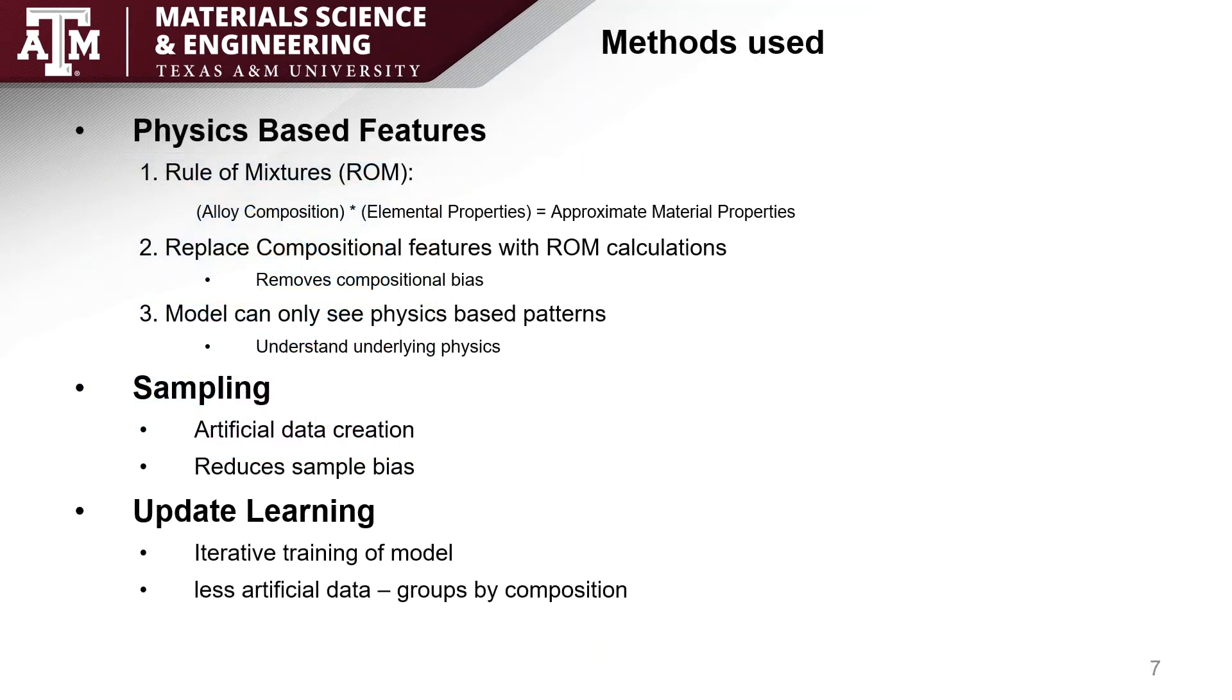Next I'll be talking about some of the methods used to make these maps better. The first of which is physics-based features. This uses the rule of mixtures that essentially uses the percentage of an element that exists in the alloy, multiplying it by its elemental property to get a proportional material properties for the alloy based on the elements that exist in it. We then replace the composition features that exist in the database using the rule of mixtures calculations.